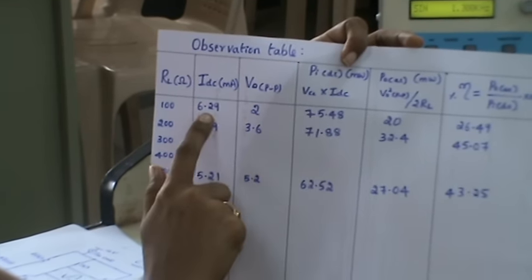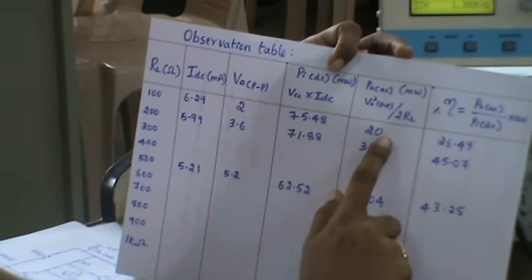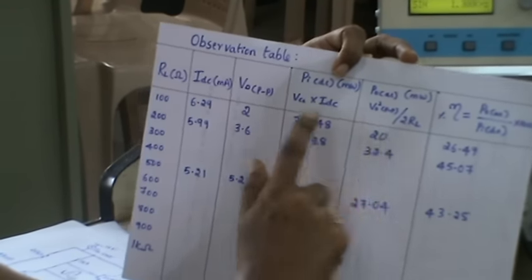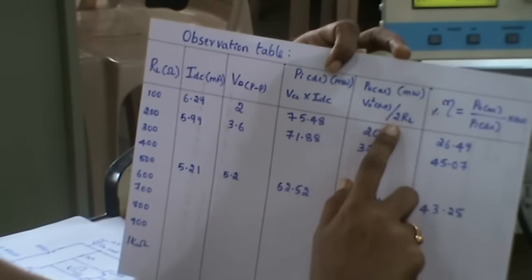Calculate the input power using the equation VCC into IDC. VCC is 12 volts, IDC value is what we have taken from the multimeter, and output power is calculated as V0 square peak to peak divided by 2RL. V0 peak to peak is 2 volts divided by 2 into RL.